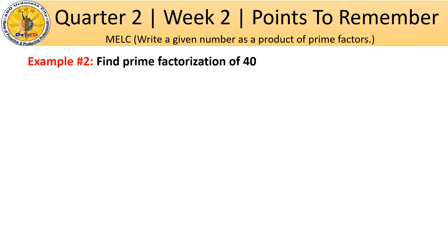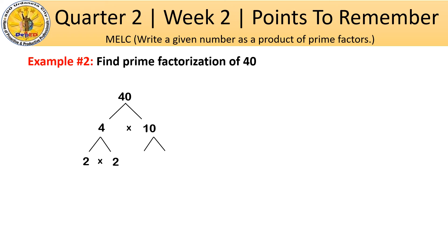Example number 2: find the prime factorization of 40. We will write down 40 and think of any two numbers that will multiply to give 40. 4 times 10 equals 40. Let's continue the process till we get all the factors that are prime numbers. 4 and 10 are composite numbers, so think again of numbers that can be multiplied to give 4 and 10.